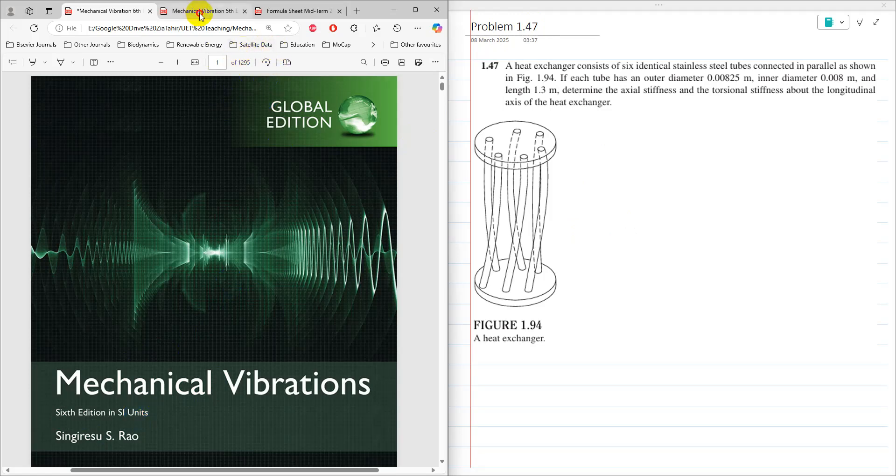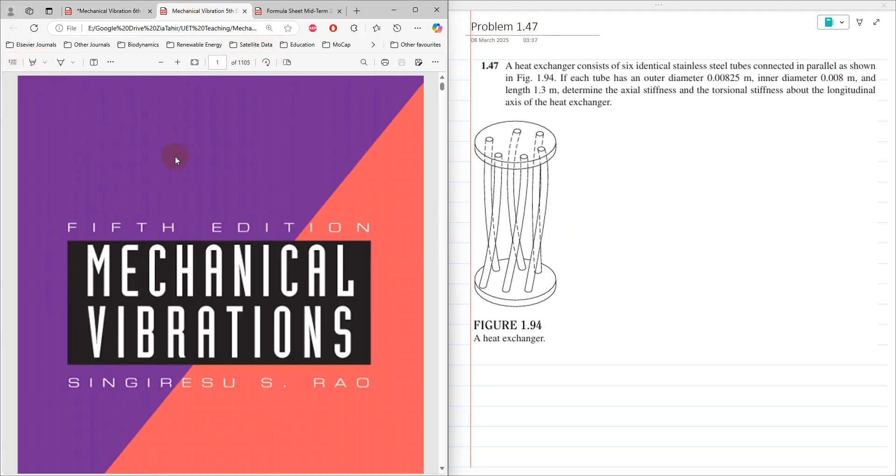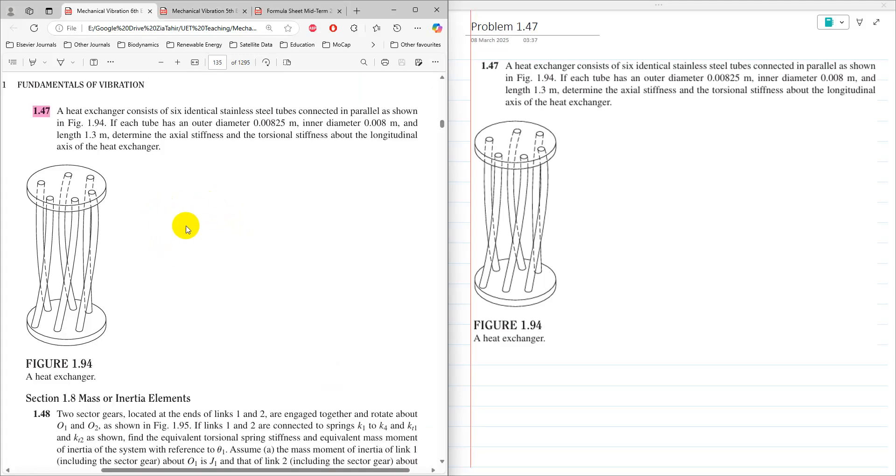It is the same problem in 5th edition of mechanical vibration. Problem 1.47: a heat exchanger consists of 6 identical stainless steel tubes connected in parallel as shown in figure 1.94. If each tube has an outer diameter 0.00825 meter, inner diameter 0.008 meter and length 1.3, determine axial stiffness and torsional stiffness about the longitudinal axis of heat exchanger.